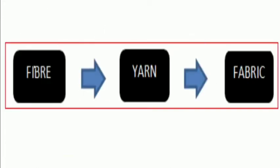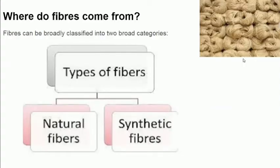Here is a tabular form: fibers are thread-like structures which form yarn. Yarn is the twisted interlocking of fibers, and this yarn further leads to formation of fabric. Fabric leads to formation of clothes, and clothes lead to dress material.